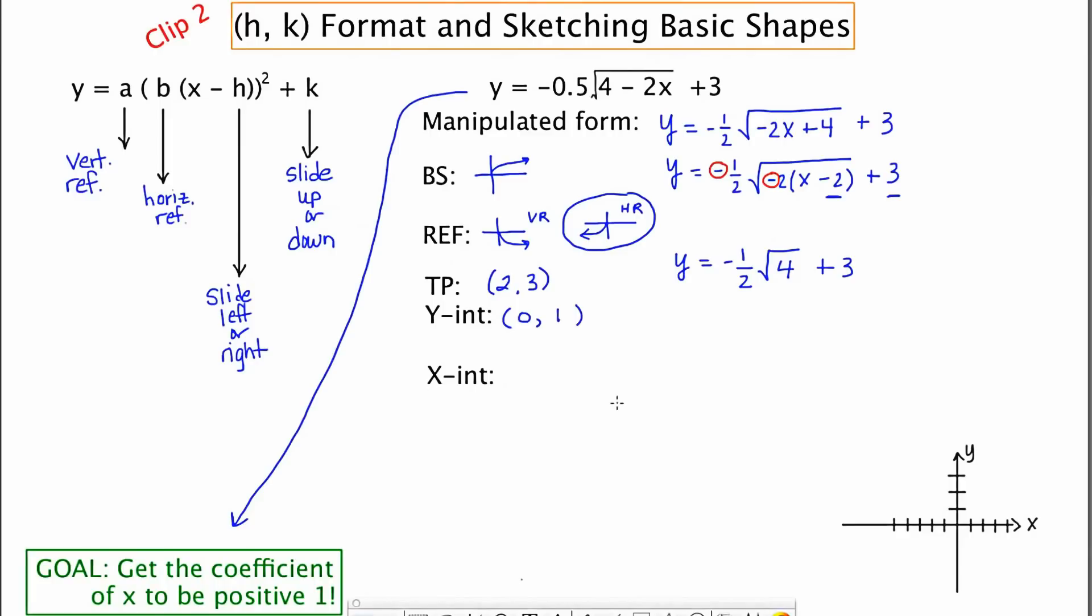The x-intercept always requires a little bit of extra work. So just be prepared for that. To find the x-intercept, we're going to let y equal zero. And I'm going to say zero equals negative 1/2 square root of 4 minus 2x plus 3.